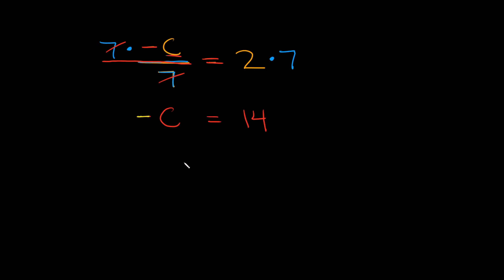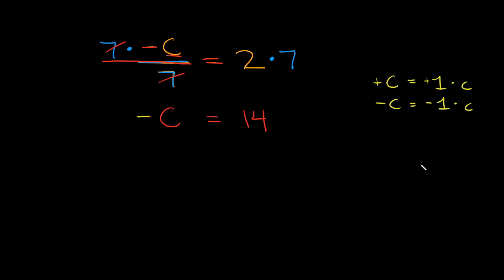What we have here is actually a negative coefficient. If this were positive c, that would be the same thing as positive 1 times c. But if it's negative c, like it is in this case, then this would be equal to negative 1 times c. So this negative c is the same thing as negative 1 times c.